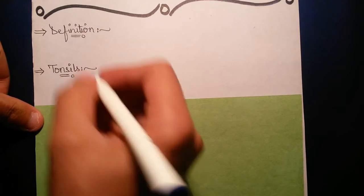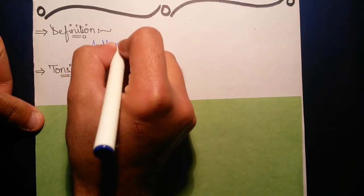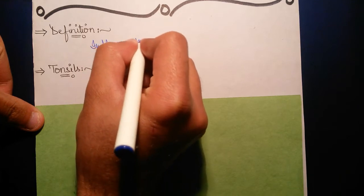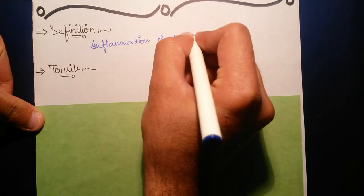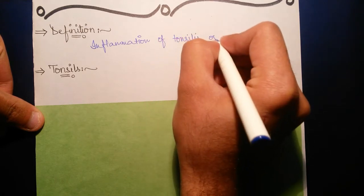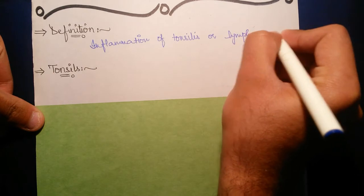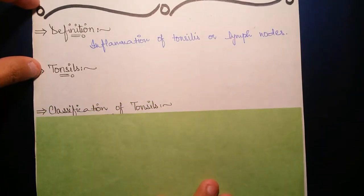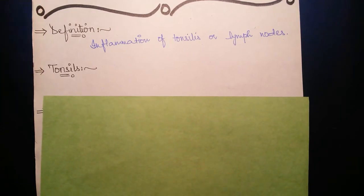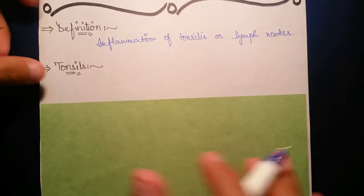Inflammation of tonsils or lymph nodes. What are tonsils? Tonsils are the lymph nodes present in the pharynx and the oral cavity. As we know, there is a lymphatic system in our body, so it has lymph nodes.